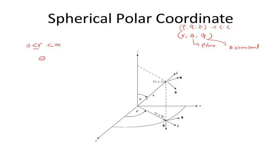Theta can start from 0 and it can go up to pi (180 degrees). And phi is the same azimuthal angle as in cylindrical coordinates — phi starts from 0 and it can go up to 2 pi. These are the ranges of values of r, theta, and phi.